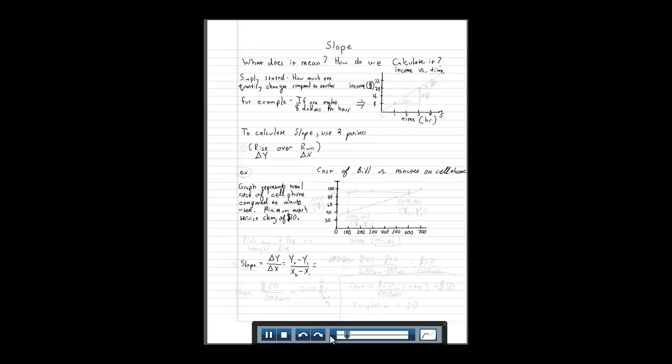Income versus time. So your total money, if you work for one hour, you'll make $8. If you work for two hours, you're going to make $16. Three hours, $24. Five hours, $32. And so on.